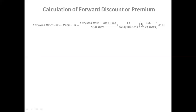So we will look at how to calculate forward discount and premium. There is a formula: Forward discount or premium = (Forward rate − Spot rate) / Spot rate × (12 / number of months) or (365 / number of days) × 100. If the problem is given in months, we take 12 divided by number of months. If it is in days, we take 360 divided by number of days, multiplied by 100. The result presents the premium or discount as a percentage.